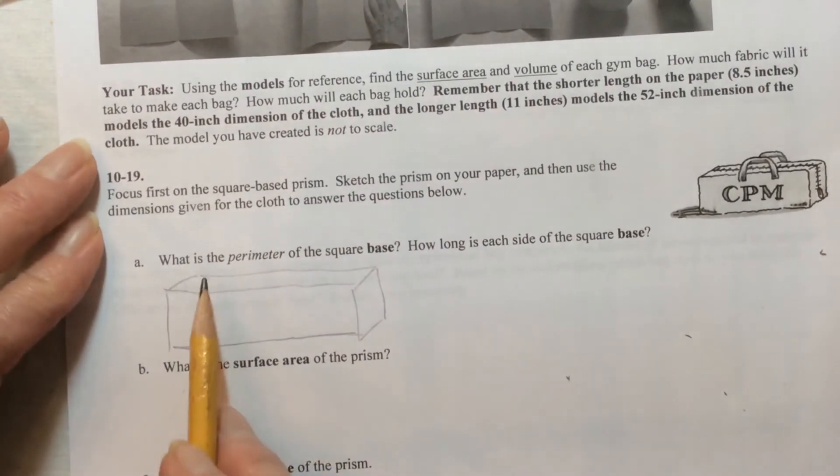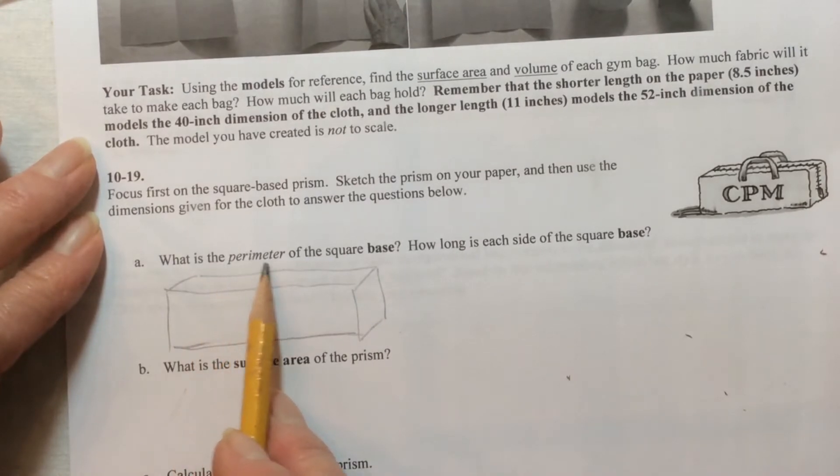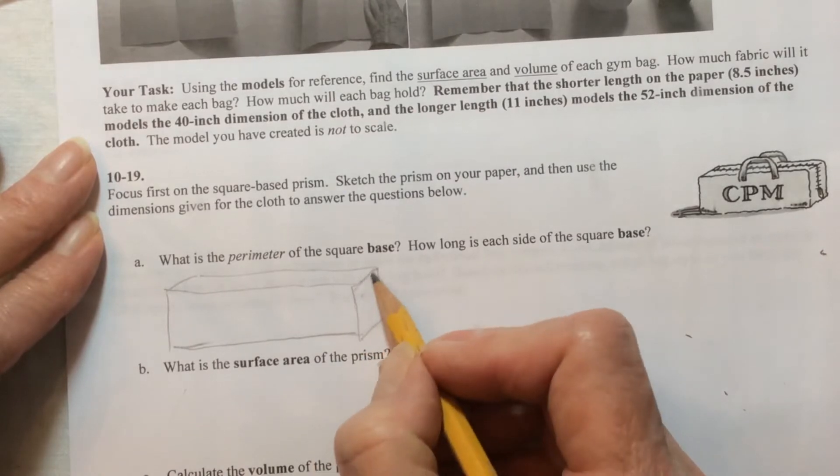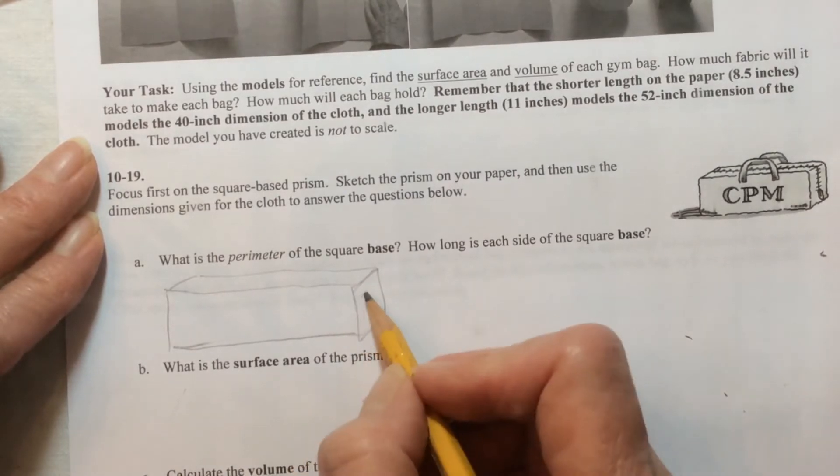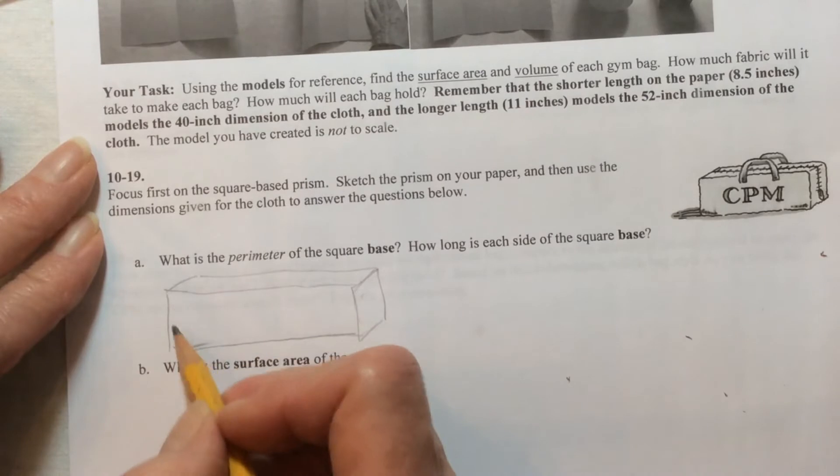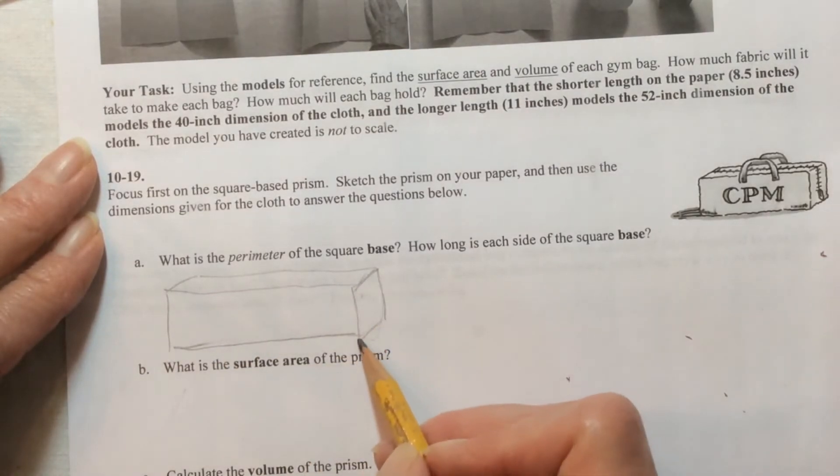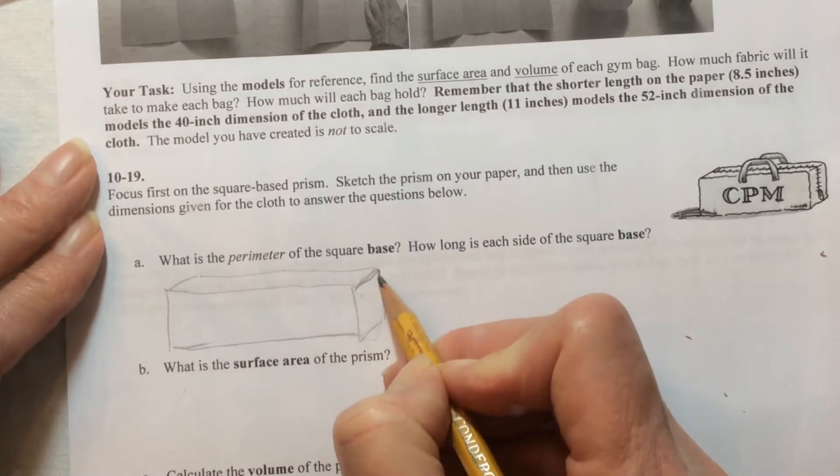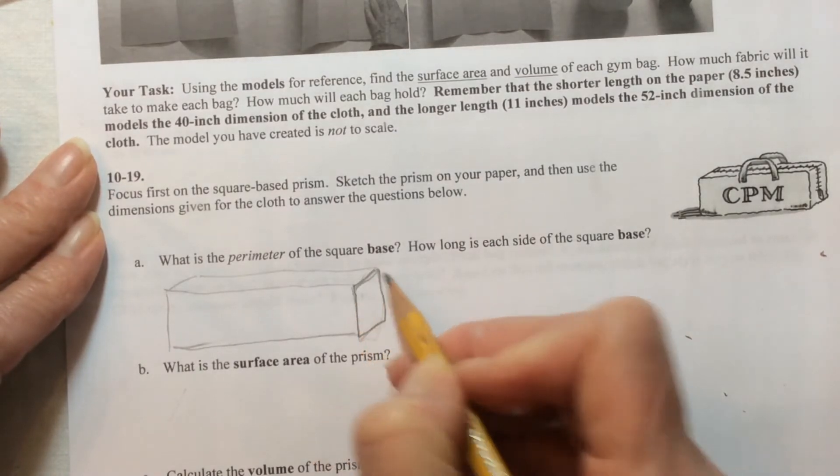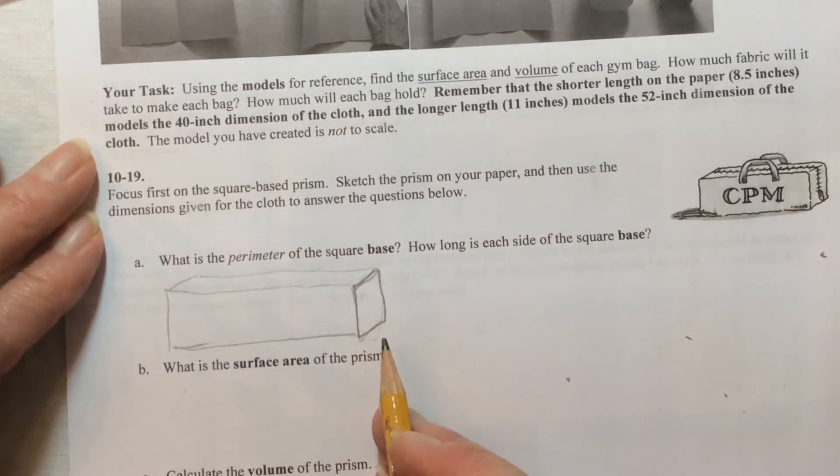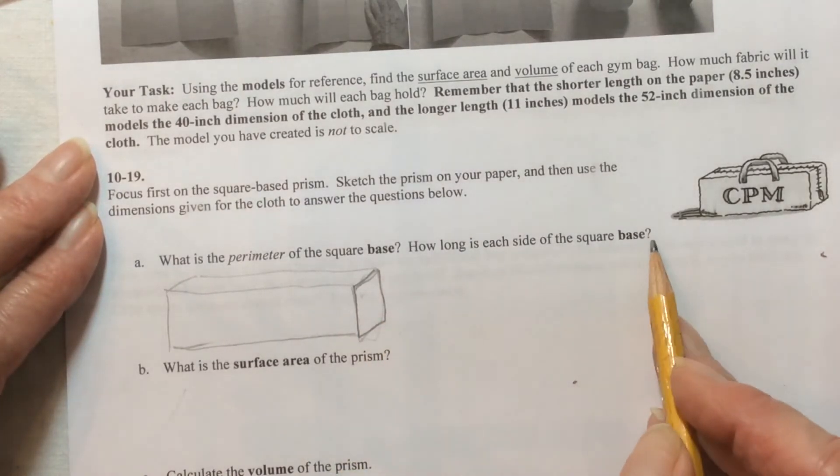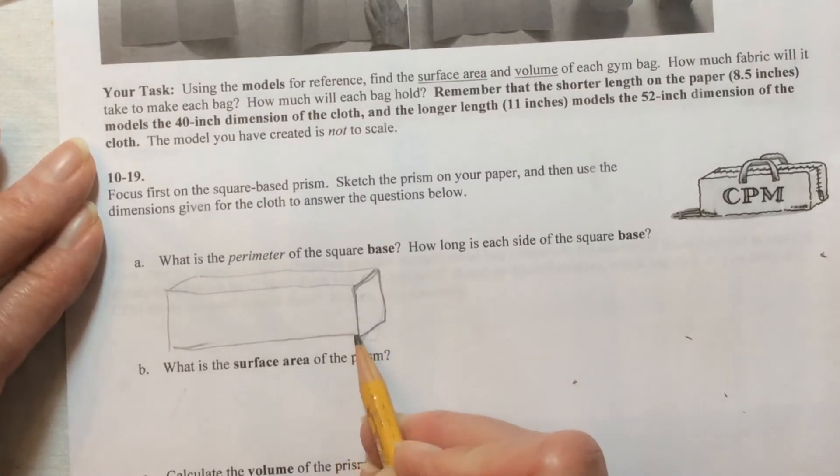The first question is, what is the perimeter of the square base? Here's the square base - this whole end here is a square base, and we've got another one on this end. What is the perimeter, the distance all the way around? From here to here to here to here, what is that distance? And how long is each side of the square base? They also want to know how long is just one side of this square.